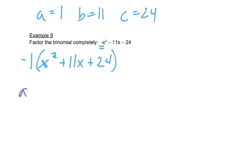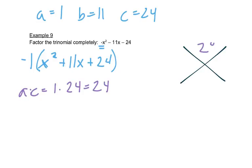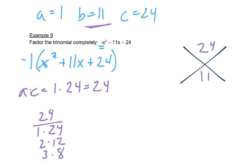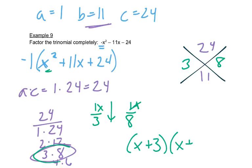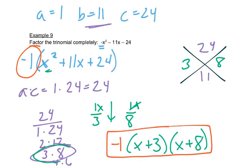There is no greatest common factor, so we'll just start with A times C, which is 1 times 24. We're trying to multiply to get 24 and add to get 11. So 24 could be 1 times 24, 2 times 12, 3 times 8, or 4 times 6. It's all positive, so I leave them positive, and I can see the pair is 3 and 8. So I write my fractions: 1 over 3 and 1 over 8. It's an X squared, so X gets put in both places. Reading straight down: X plus 3, and X plus 8. And this negative 1 that was out in front has to stay out in front.